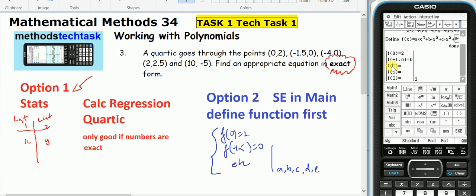The third point is when x equals negative 4, y equals 0. When x equals 2, y equals 2.5.